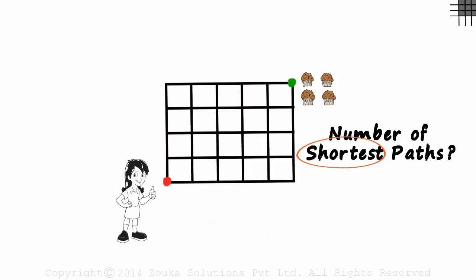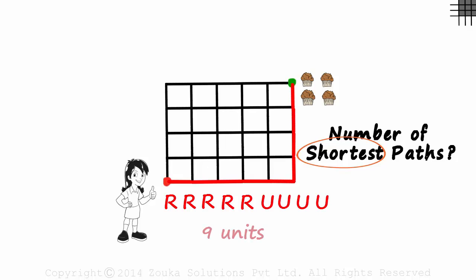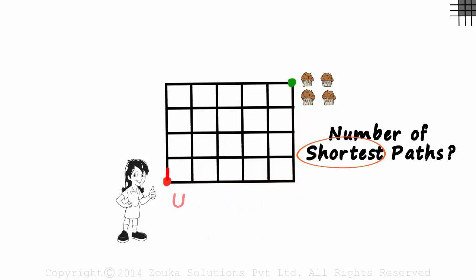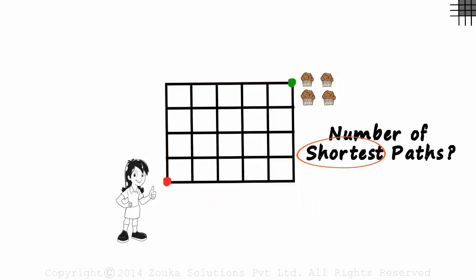Now let's look at the earlier paths that had crossed our minds as the shortest paths. Right, right, right, right, right, up, up, up, up — again nine units. We had also thought of up, up, up, up, right, right, right, right, right — the shortest path will cover nine units. That's our conclusion. We will come back to this point.